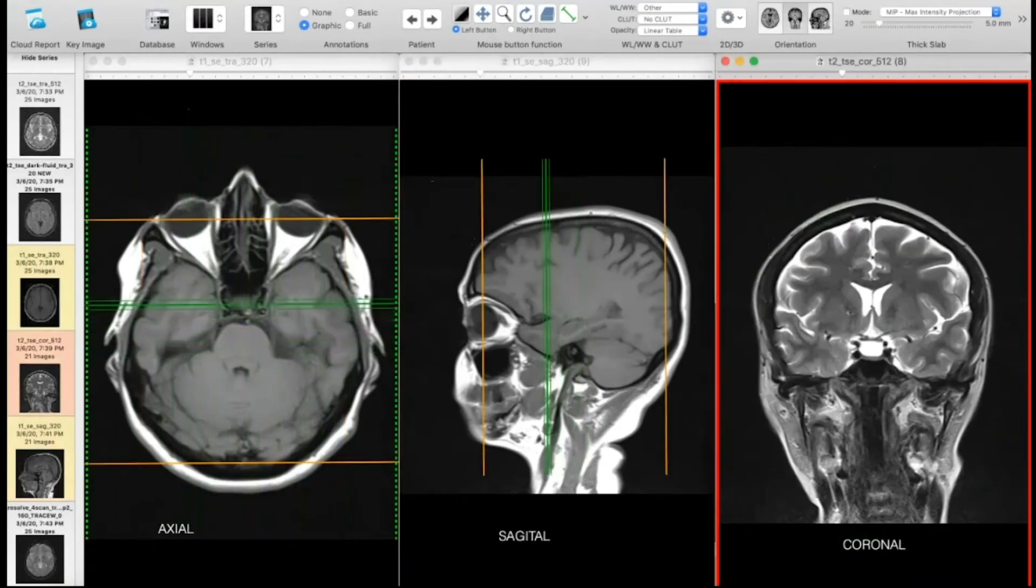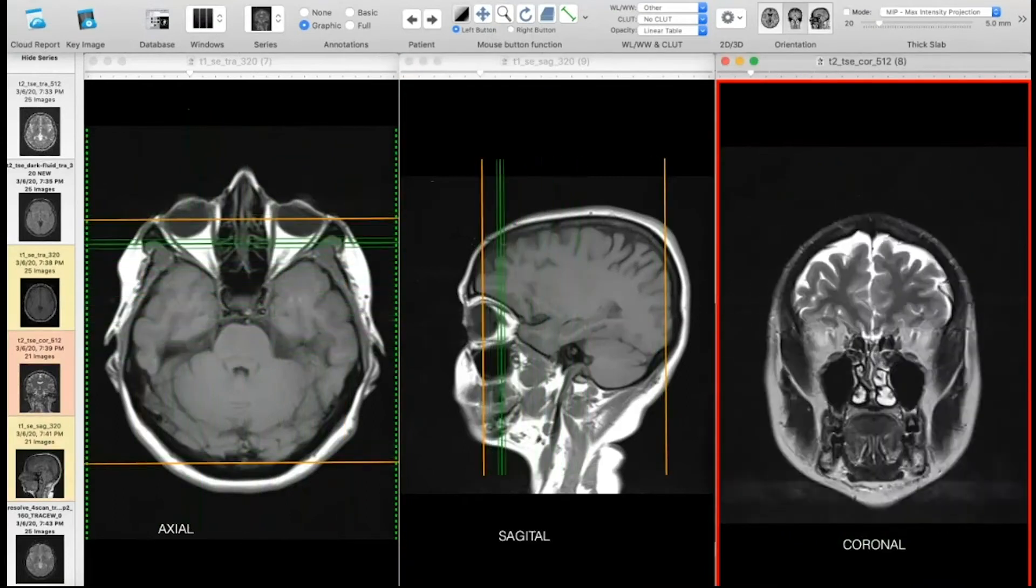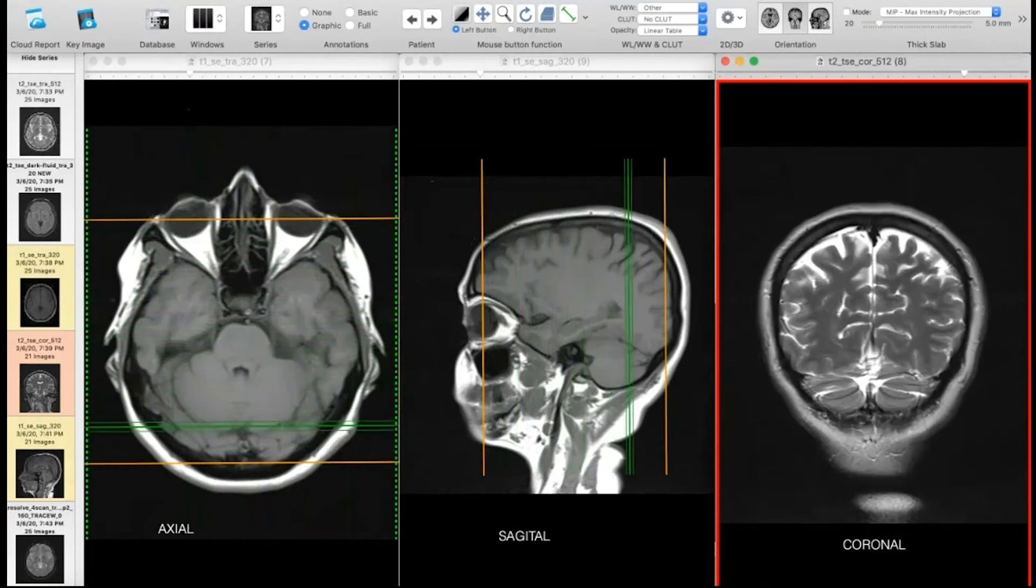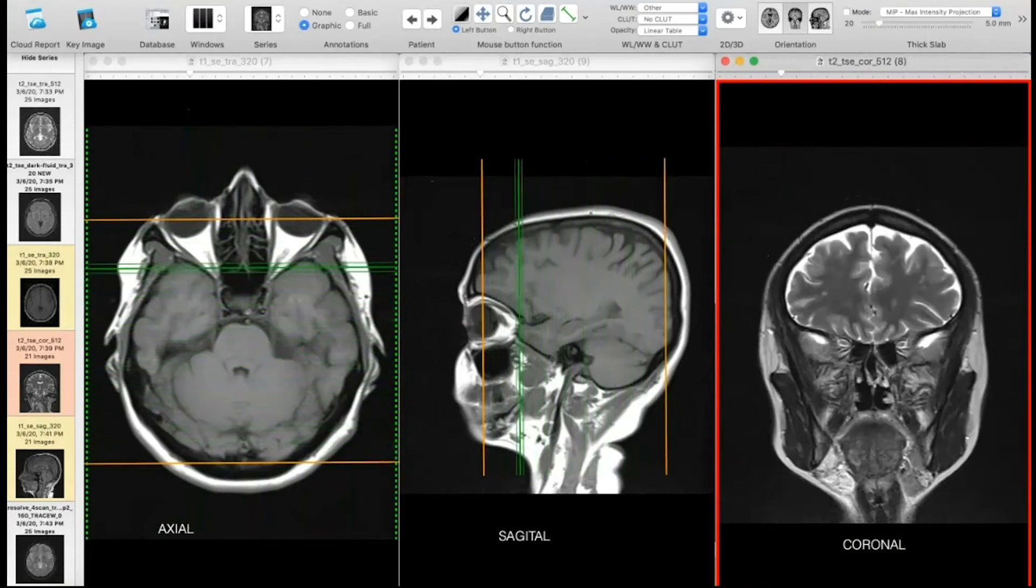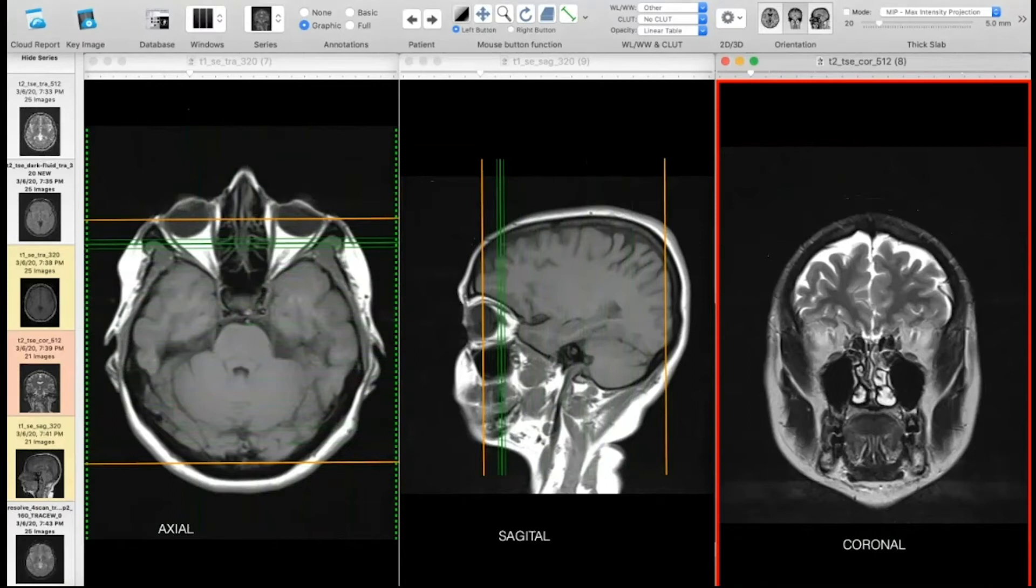And if we move the coronal plane, you can see how it goes from front to back, dividing it in an anterior and posterior planes. So those are the main planes that you can see on MRI.